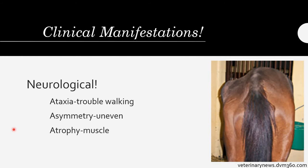How is it going to manifest? We're going to see neurological symptoms, which for EPM are shortened to the three A's: ataxia, asymmetry, and atrophy. For ataxia, you can think of 'taxi' — getting from place to place — with the 'a' prefix meaning the opposite. So they're going to have problems getting from place to place, and commonly you'll see this in one gait or another — a horse might have a really hard time cantering but be fine walking.